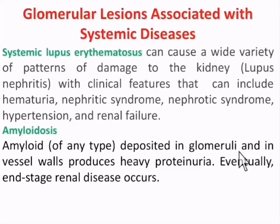The second disease we will take is amyloidosis. Amyloidosis is also a systemic disease that occurs when there is precipitation of amyloid fibrils in various tissues, including the liver, kidneys, heart, and other organs. These amyloid fibrils are abnormal, aberrant, misfolded proteins.